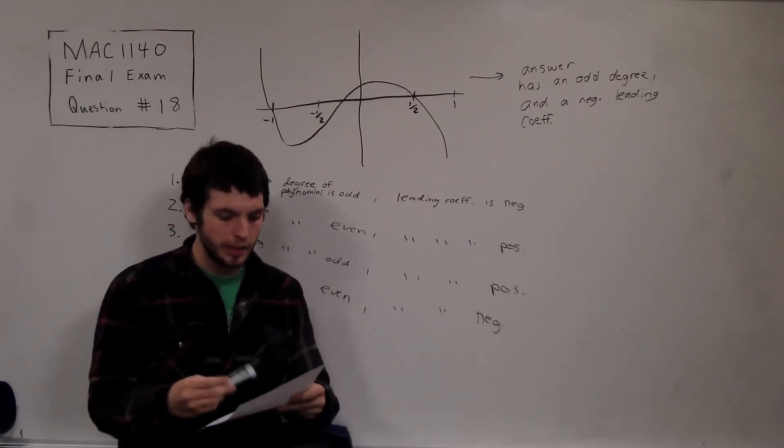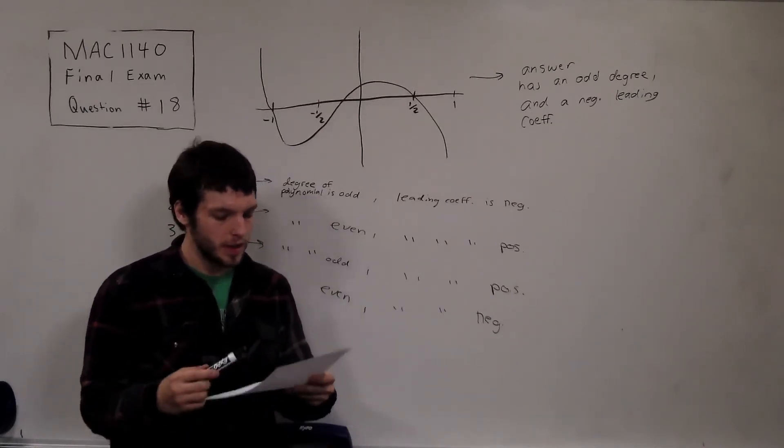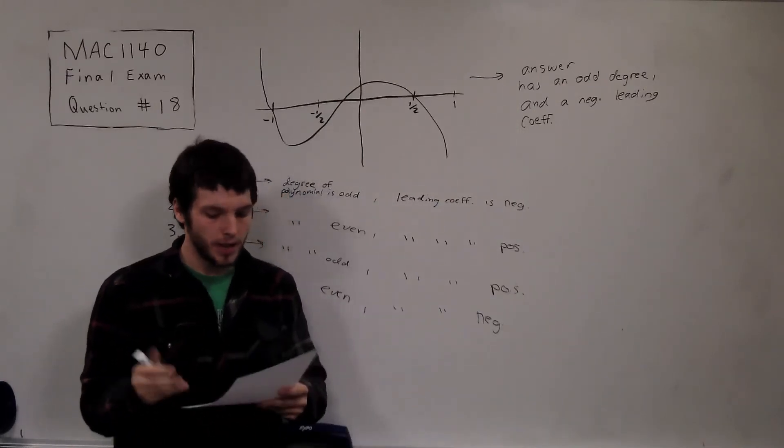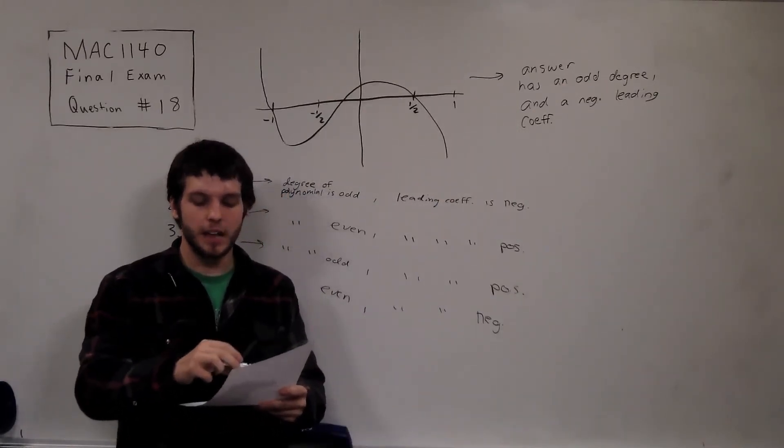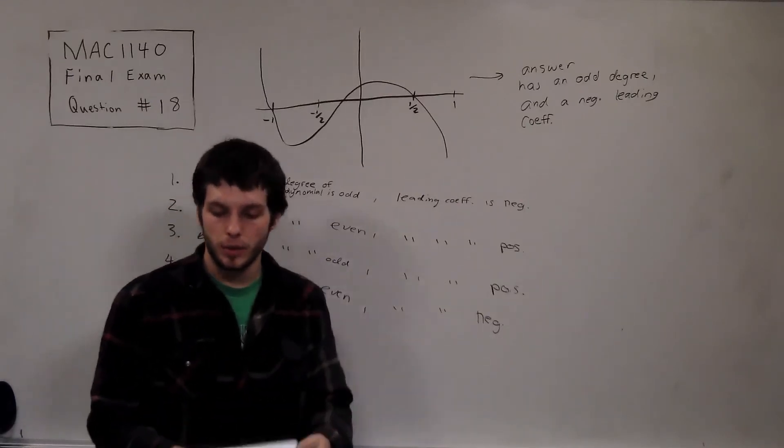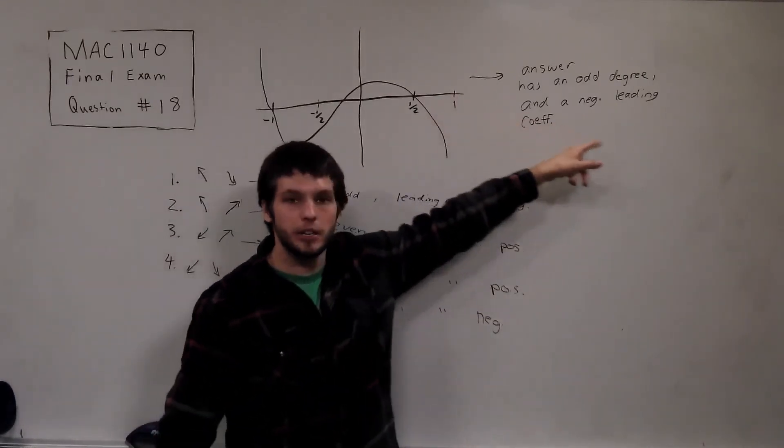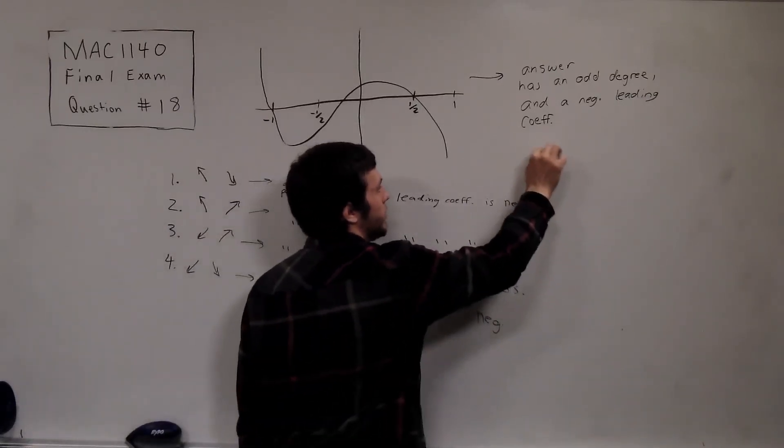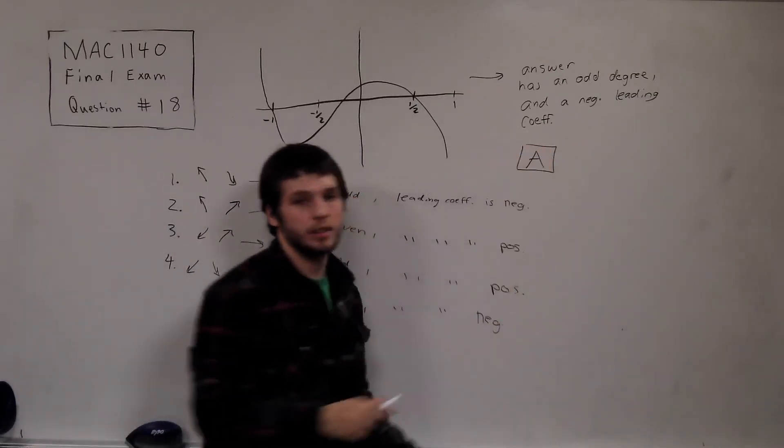But what about leading coefficients? Leading coefficient, in case you don't know, that's the number in front of the highest power of x. That is, for choice A, it's negative 3. For choice C, it's 3. So, here, we need to have a negative leading coefficient. So, that eliminates C. That means the only thing we have that can possibly be correct is answer A.